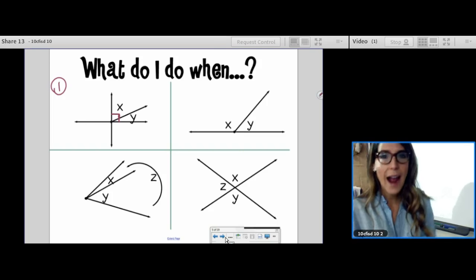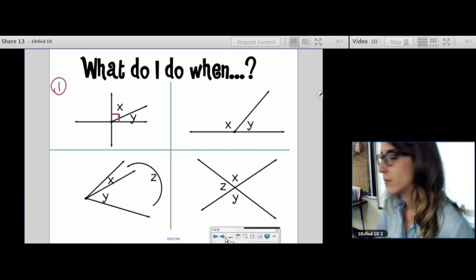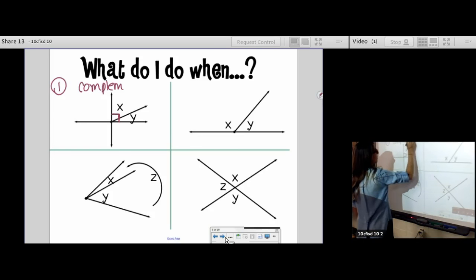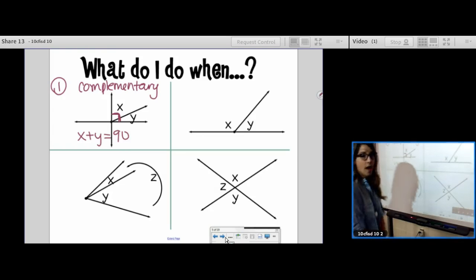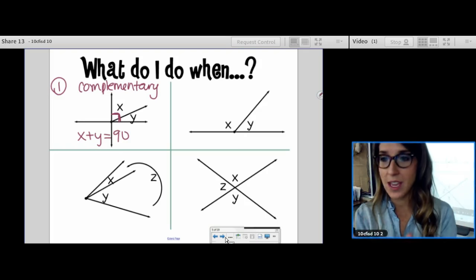What would my strategy be to solve for these missing angles? Well, I know that these angles are complementary. These are complementary angles because of that right angle marking. Now that I know that they're complementary, to solve this problem, I'm going to add those two expressions, whatever they are, and add them to equal 90, and then solve for x.